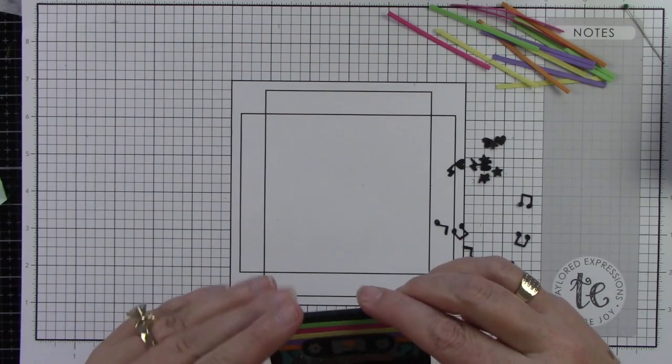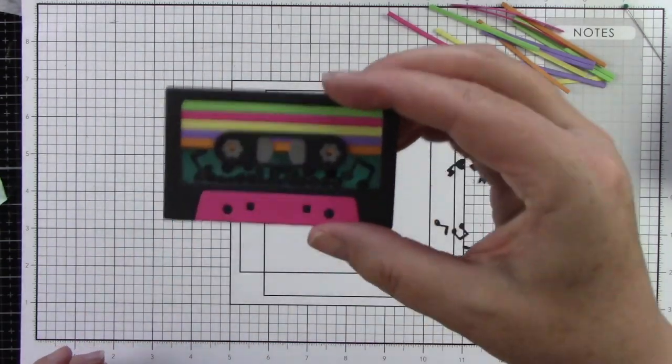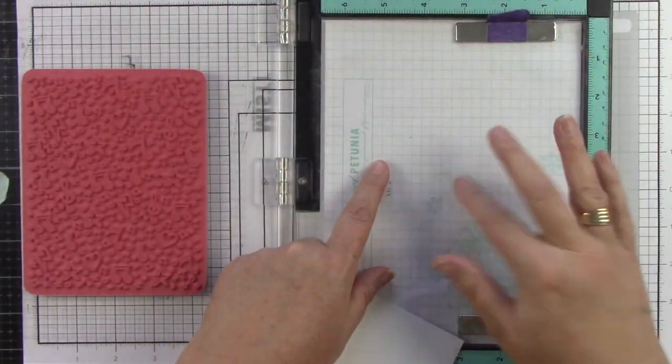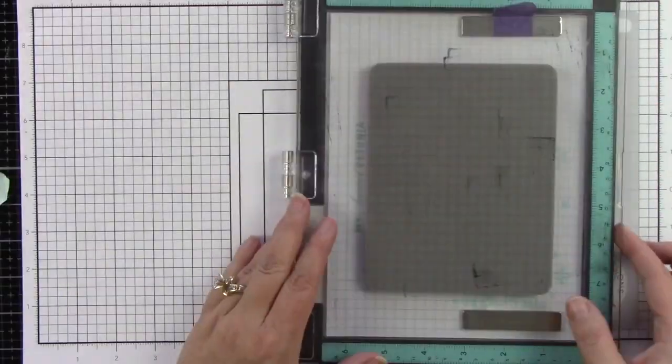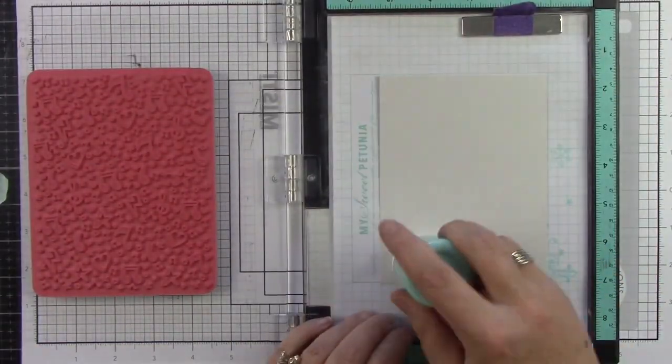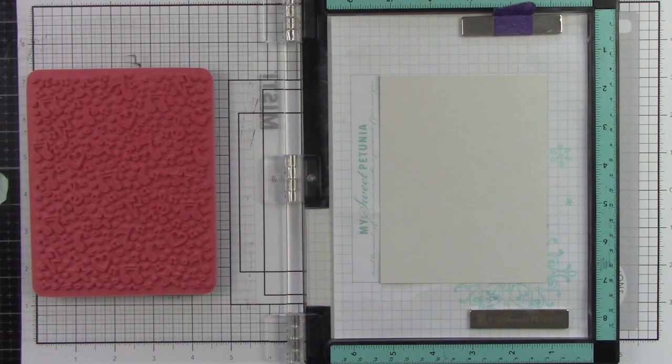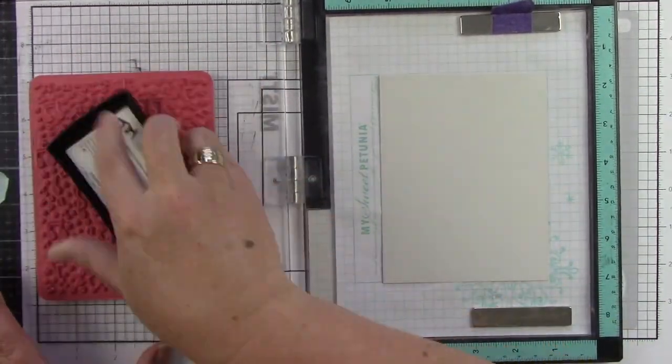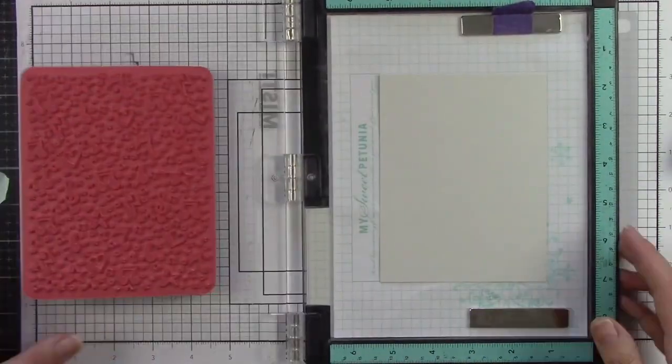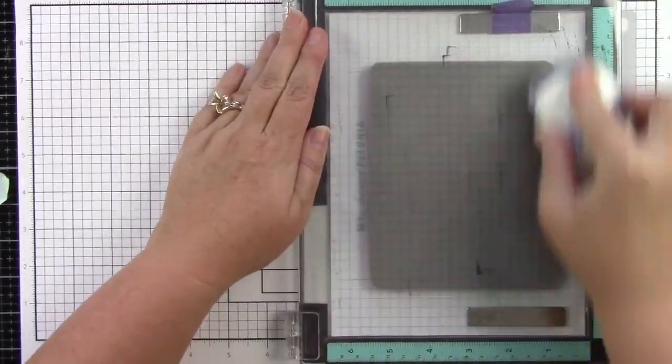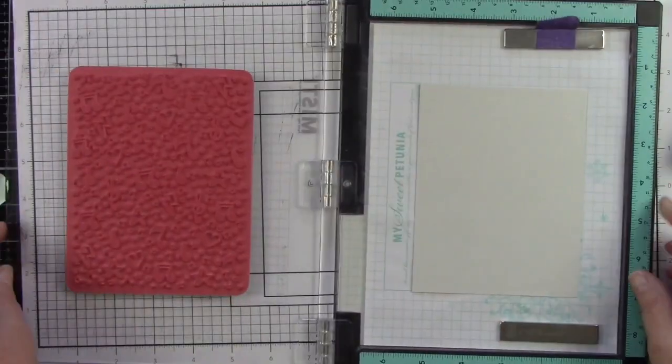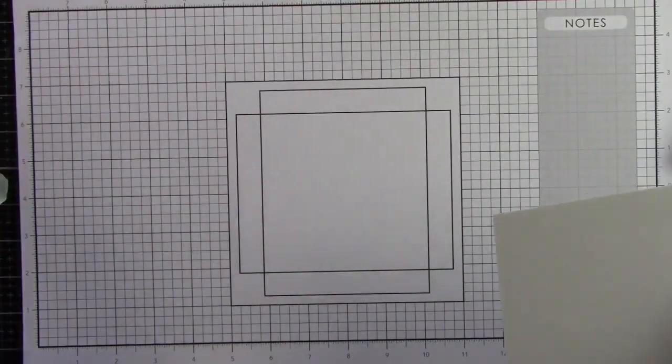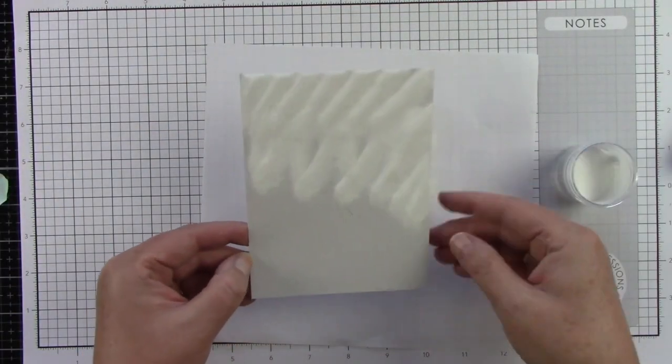I'm adding some liquid adhesive and then I can add the top. I'm going to put this aside and put something heavy on top until that glue has completely adhered everything. Let's do our background. We are using the mix master background on a piece of sea salt cardstock. I am prepping it with an anti-static powder tool. I'll be using versamark ink because I want to do some white heat embossing.